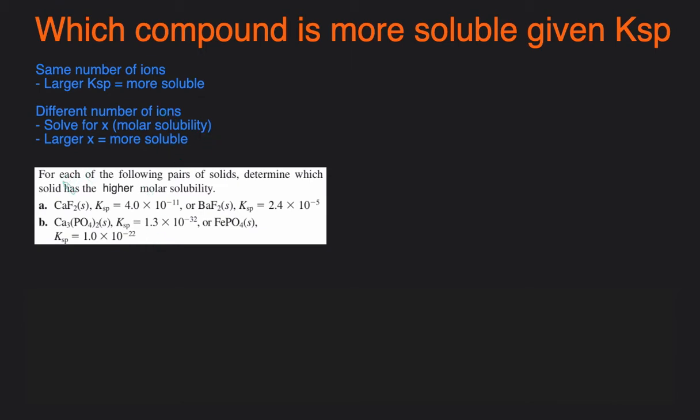For each of these examples, we're going to determine which of these pairs of solids has a higher molar solubility. Essentially, which one of these solids is going to be more soluble. So the first thing we're going to look at is how many ions each of these solids will dissociate into or dissolve into.